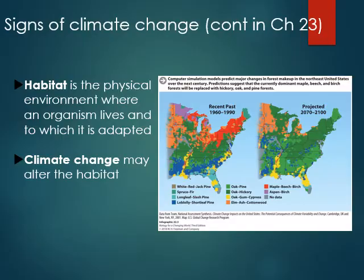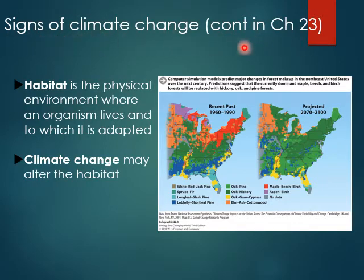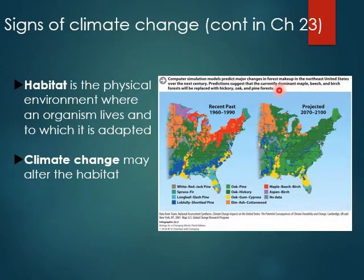We're going to talk about these different habitats, foreshadowing chapter 23 on global climate change. A habitat is the physical environment where an organism lives and to what it's adapted. Climate change can obviously alter habitat, and this is an example we'll get much more into in the next chapter.